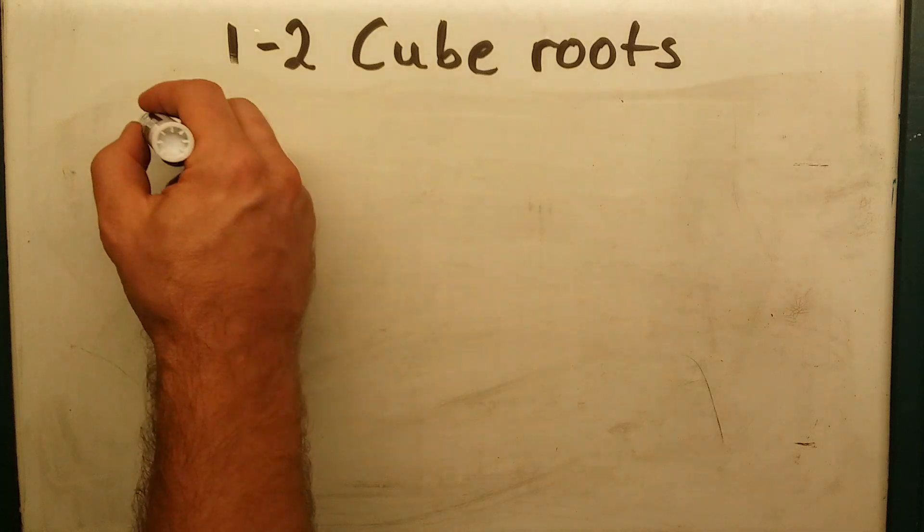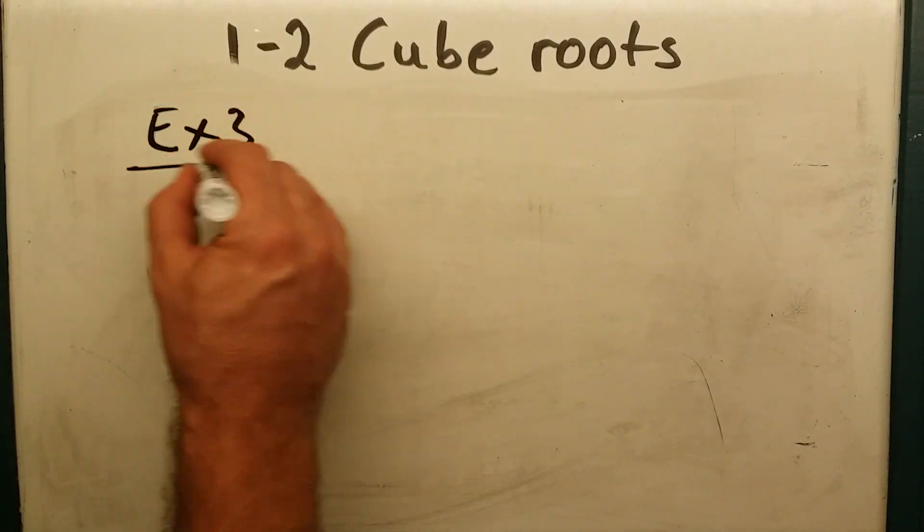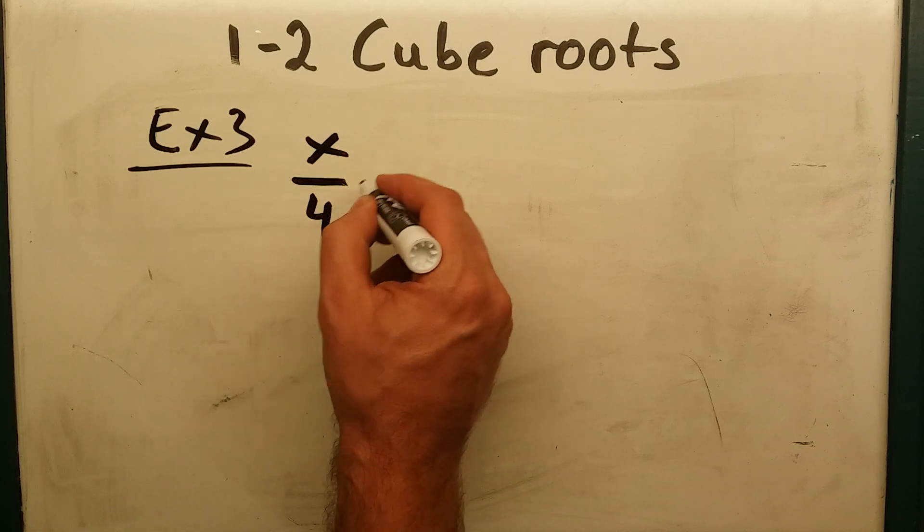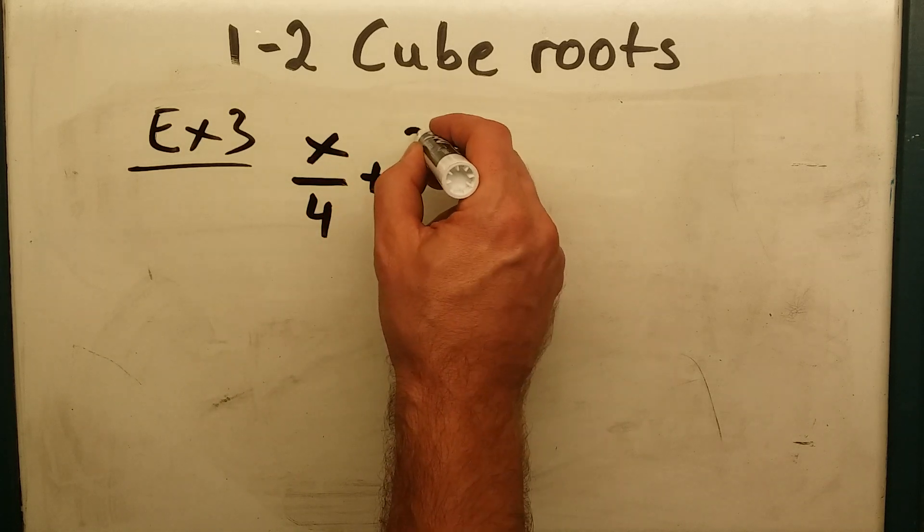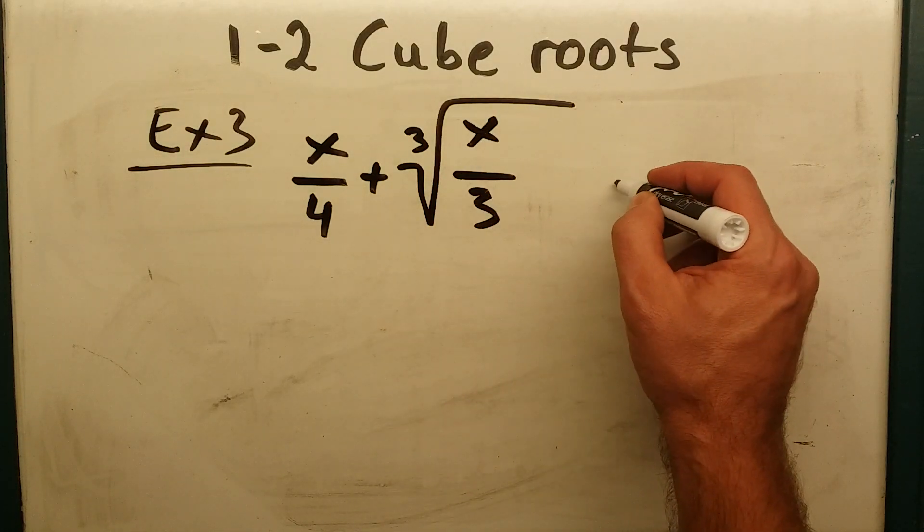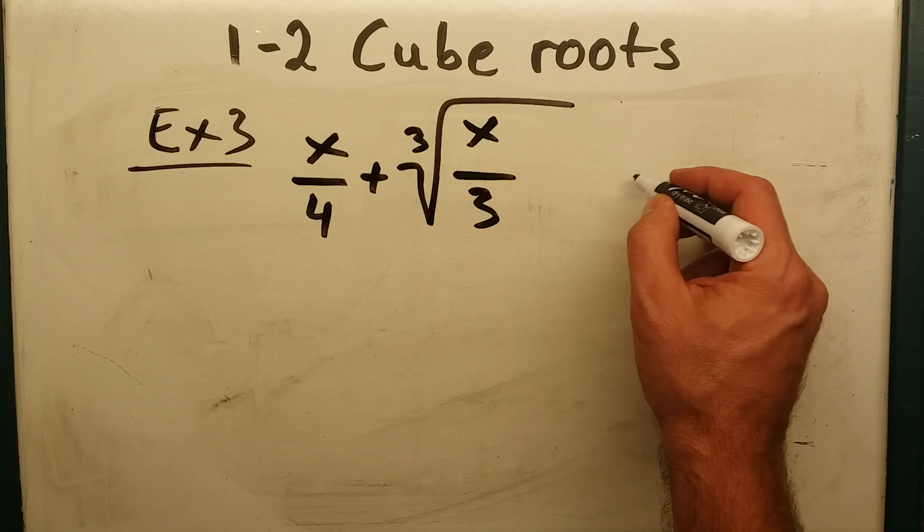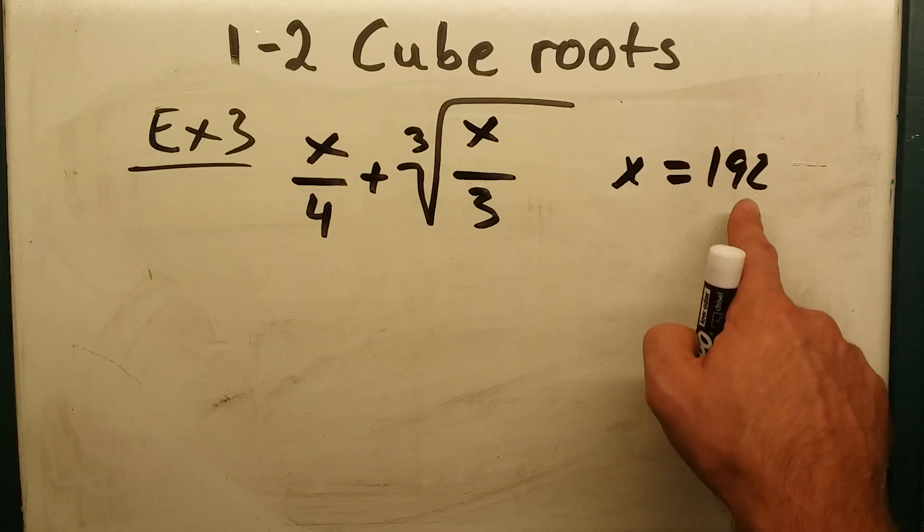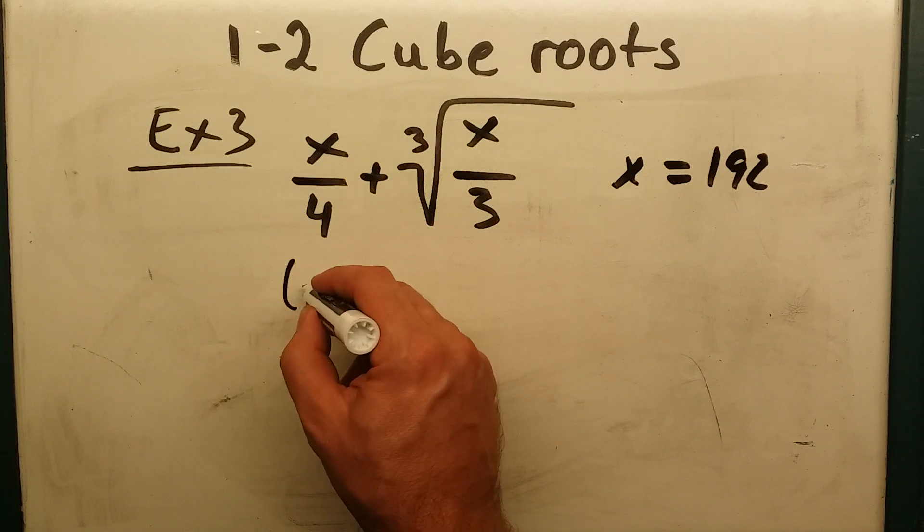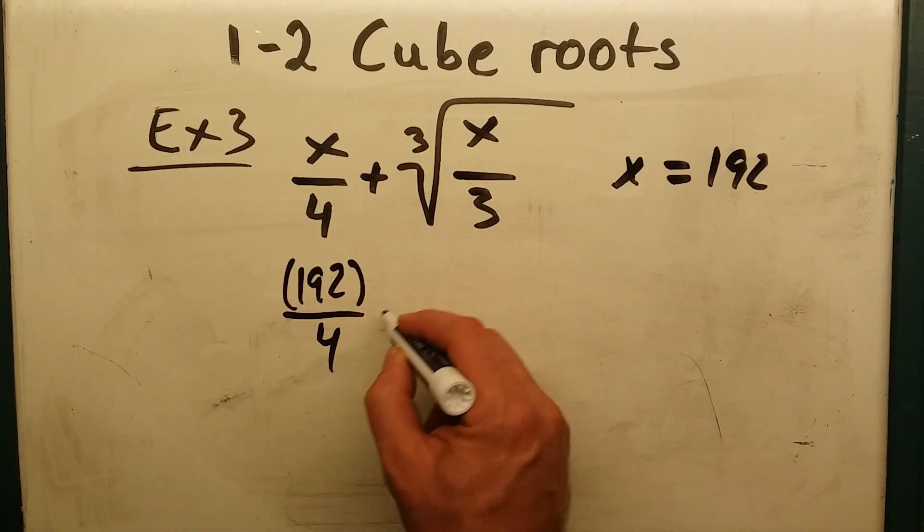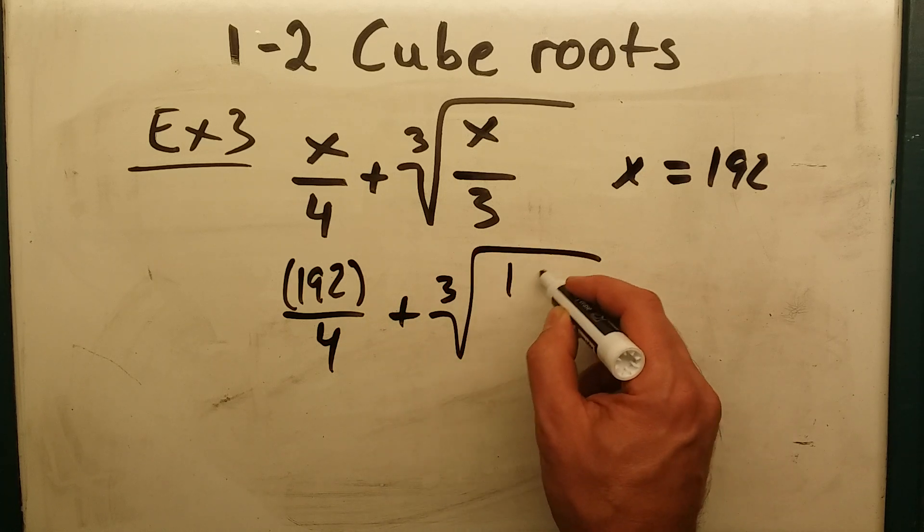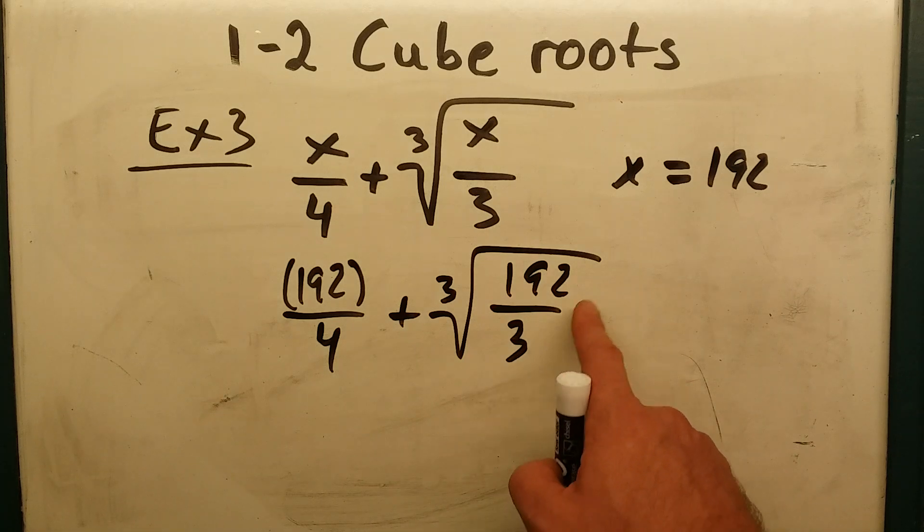Alright. Let's look at another example. Example 3. Alright. This is fractions. We all love fractions. So let's have some fun. x over 4 plus the cube root of x over 3. And we know that we are given that x is equal to 192. Okay. We're going to replace x with 192. Remember to put it in parentheses. 192 over 4 plus the cube root of 192 over 3.